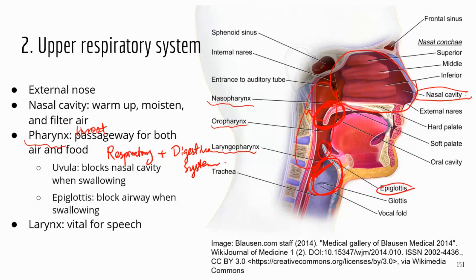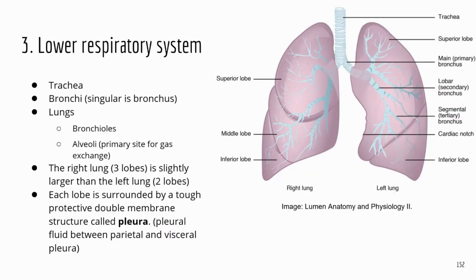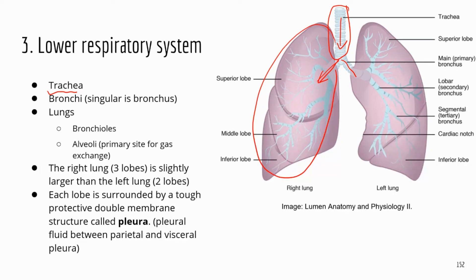After the pharynx, air goes through the larynx, which is known for speech — it contains the voice box and generates speech. Now moving on to the lower respiratory system, which starts at the trachea. The trachea has ring-like structures made of cartilage that prevent it from collapsing, keeping your airway open so air can enter the lungs. After the trachea, you have two bronchi — the singular is bronchus — and each bronchus goes into each lung. Inside the lungs, the bronchi branch off into smaller tubes called bronchioles, and at the end you have alveoli, which are the primary sites for gas exchange.